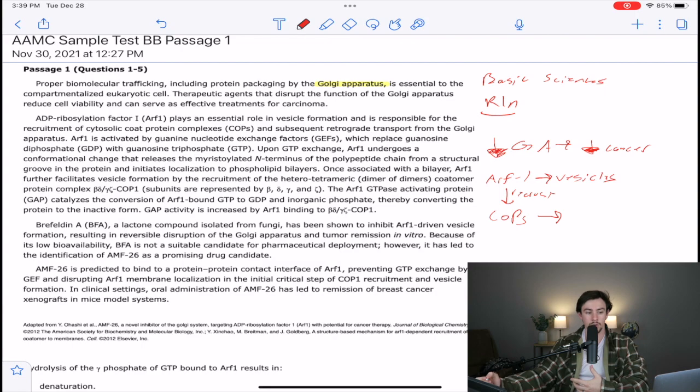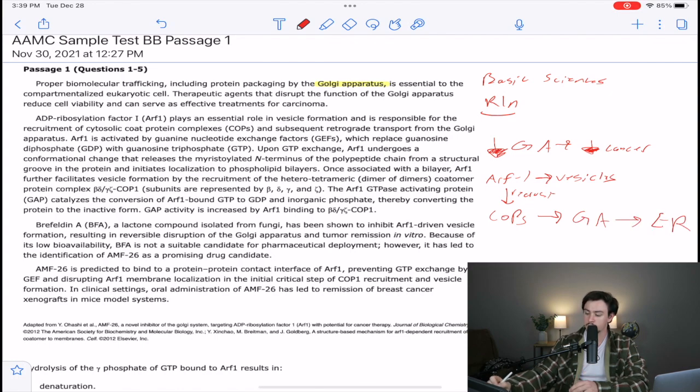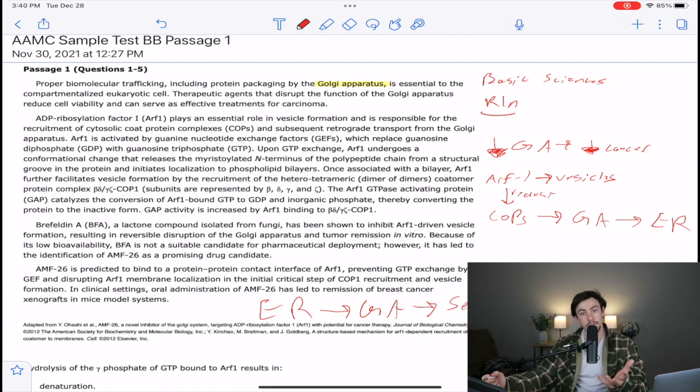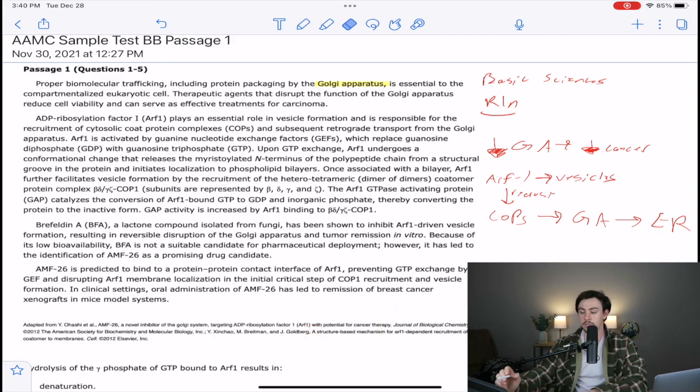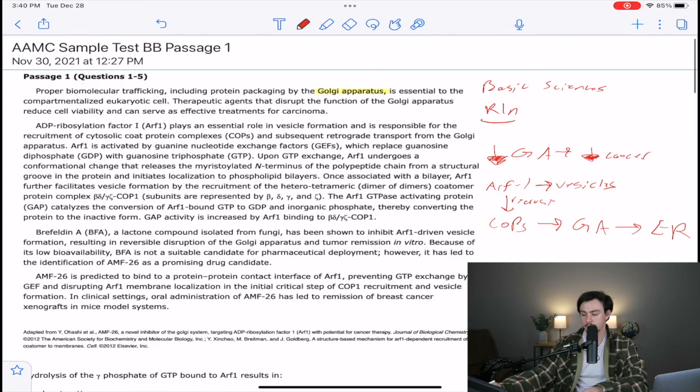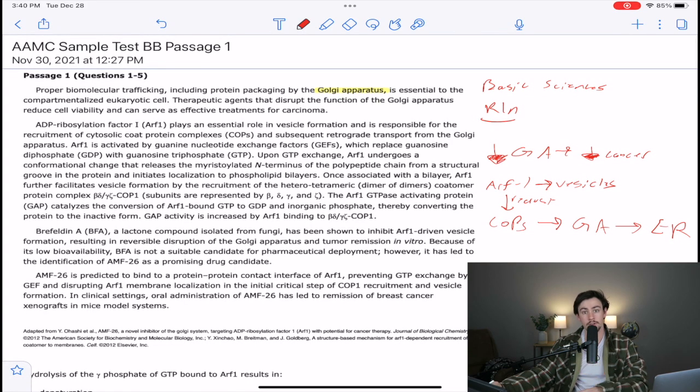So the question you ask yourself is, if it's retrograde transport, then where do proteins come from before they're at the Golgi? And the answer to that would be the endoplasmic reticulum. So the general order would be the ER goes to the Golgi, which goes to secretion. But if we're going in a retrograde fashion, then we're going backwards here. That's all it really means. That's a good little relationship there right off the bat.